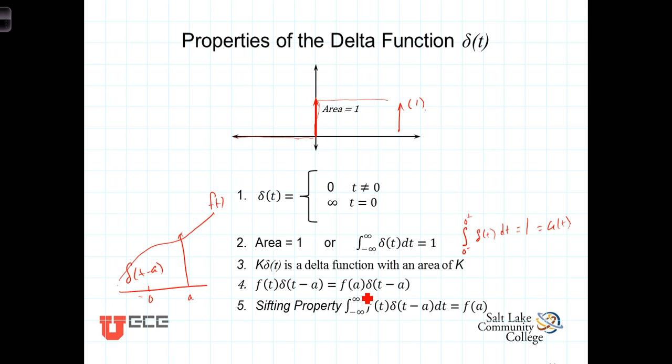That leads us, then, to the final property we're going to discuss at this time, known as the sifting property. The sifting property, simply stated, is that if you integrate the product of some continuous time function, f of t, times a delta function, integrate it from minus infinity to plus infinity, you end up with f of a.